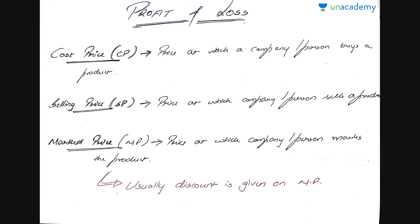Let's start with the basic terminologies in profit and loss. The first one is the cost price — it is the price at which a company or a person buys a product. So for example if you're running a company and you are buying some raw materials from your vendor, the cost price is the price incurred by you to buy that product. Selling price is the price at which you sell that product.